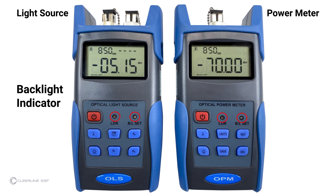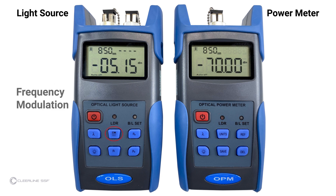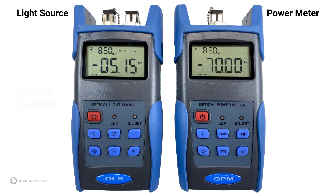Backlight indicator and backlight sensor. Keys specific to the light source are: frequency modulation, which controls laser frequency; rated power setting, which selects default output power; and output controls, which raise or lower output as needed.